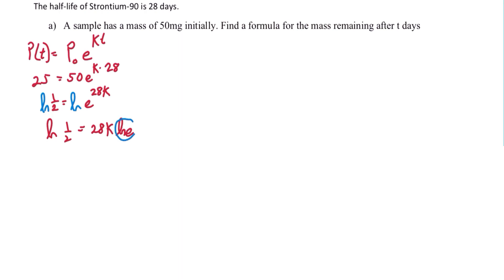Recall that the natural log of e is really just 1. So in order to isolate k, we now need to divide by 28. k is equal to the natural log of 1 half divided by 28.